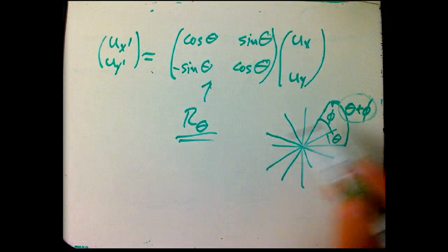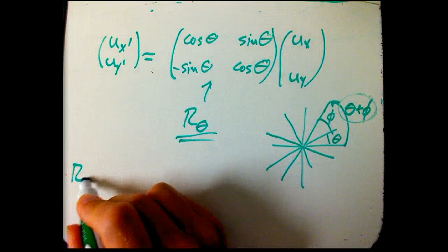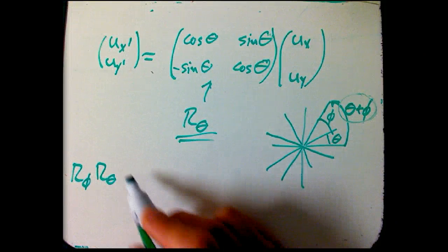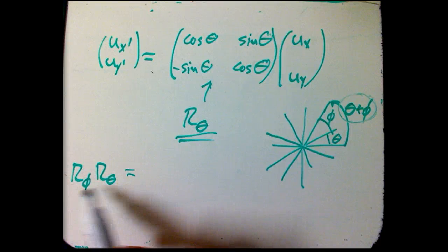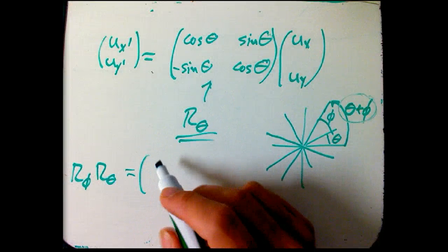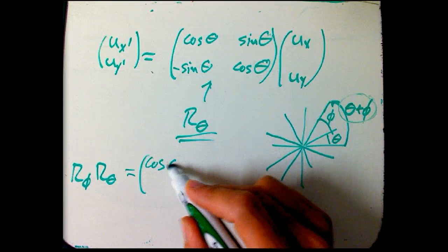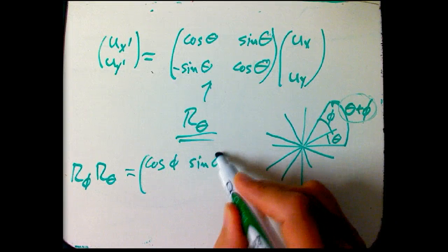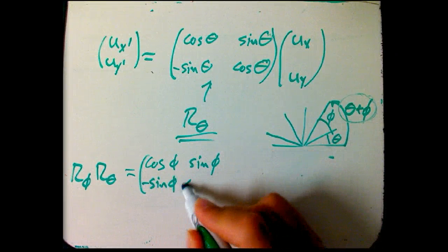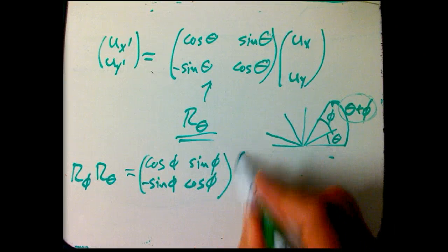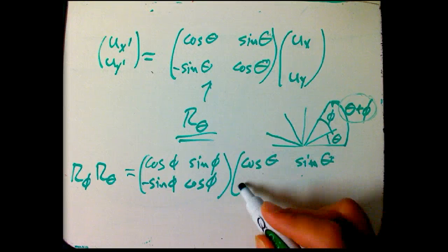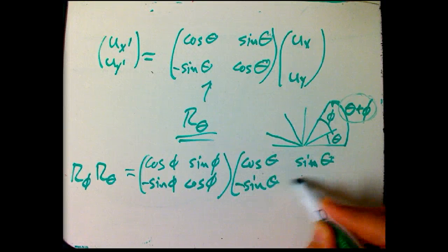Let's see why this works. It should say that if I rotate by theta and then by phi, that I should just get, end up getting a rotation matrix with angle theta plus phi. Well let's do that matrix multiplication. Cosine phi, sine phi, I'm going to have to erase part of that. And then minus sine phi, cosine phi. And then cosine theta, sine theta, that's a sine, minus sine theta, cosine theta.